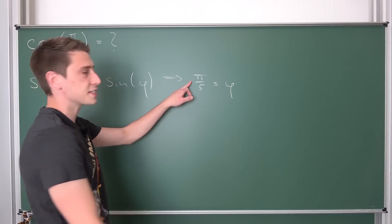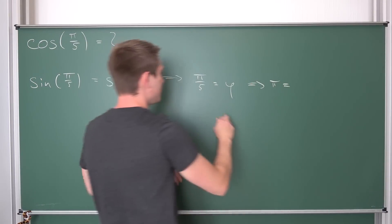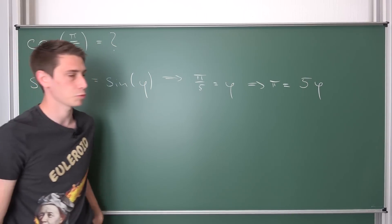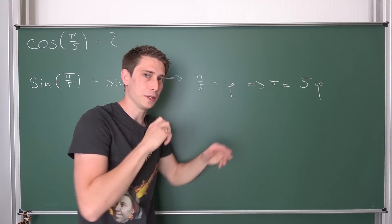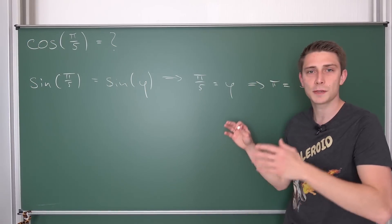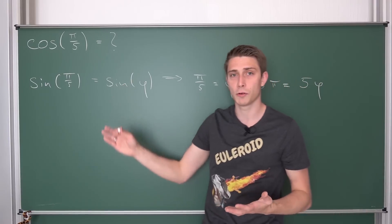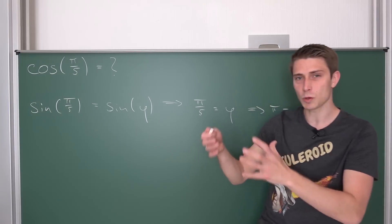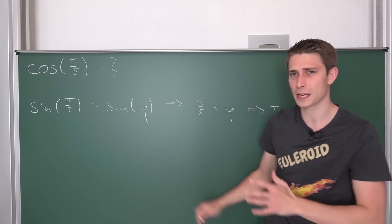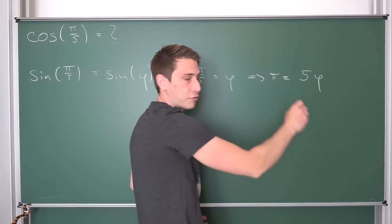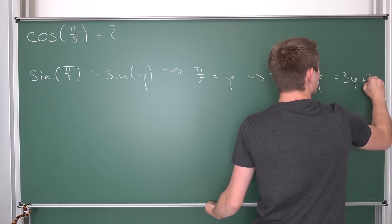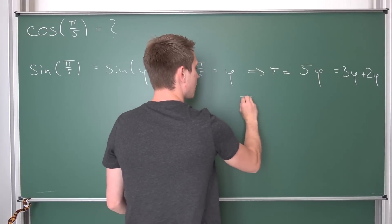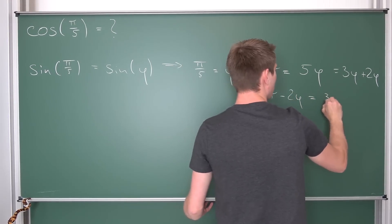Now we are going to do some manipulations. We split 5φ as 3φ + 2φ, then subtract 2φ from both sides, leaving us with π − 2φ = 3φ.